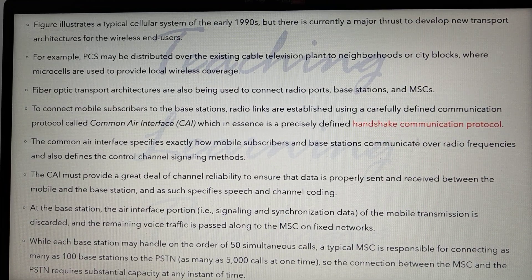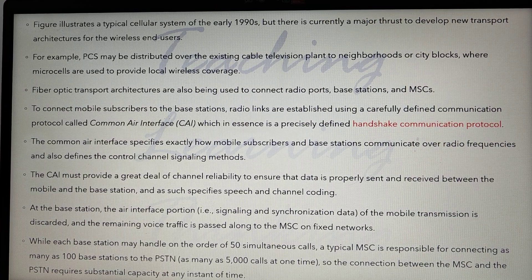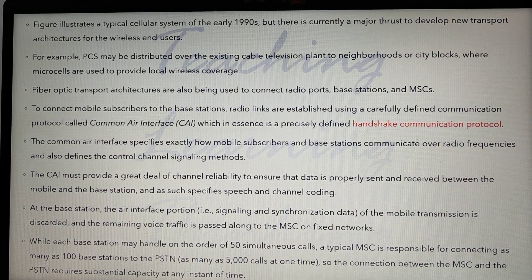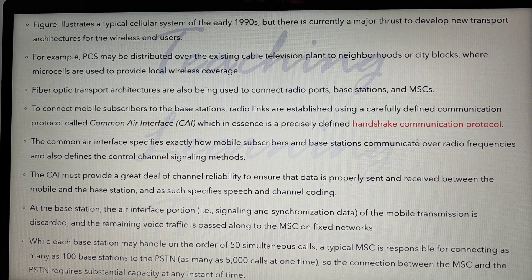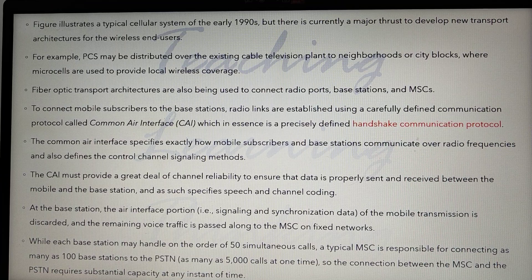At the base station, the air interface portion, signaling, and synchronization data of the mobile transmission are discarded, and the remaining voice traffic is passed through the MSC or fixed network. While each base station may handle on the order of 15 simultaneous calls, a typical MSC is responsible for connecting as many as 100 base stations to the PSTN, handling as many as 5,000 calls at a time. The connection between the MSC and the PSTN therefore requires substantial capacity at any instant of time.